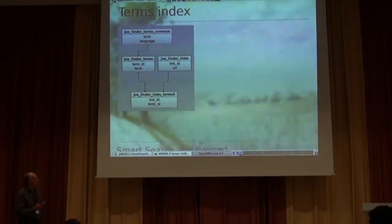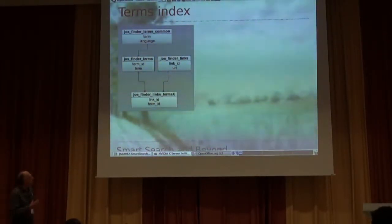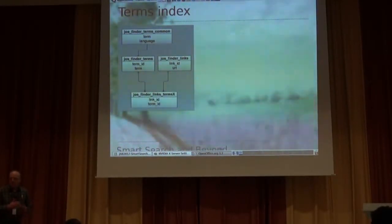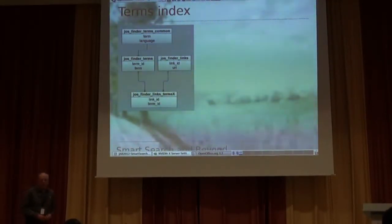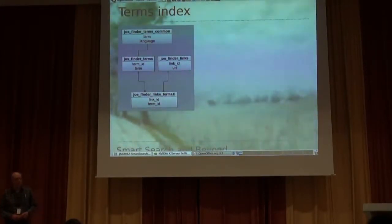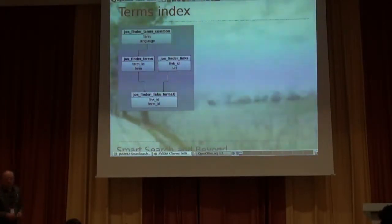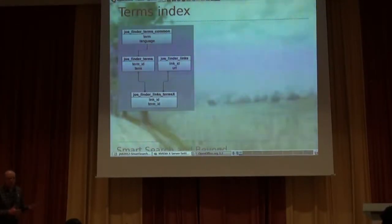So, let's have a look at the process of actually indexing. Broadly speaking, it's divided into eight parts. When I talk about an index, it's not just one table — we're actually talking about lots of different tables. If you've ever had a look at the database within 2.5, you'll see a lot of JOS underscore Finder tables — about 20 of them. The main one to look at is JOS Finder links, where there's one row pointing to each content item. The terms — the words or phrases that we're indexing — are stored in the JOS Finder terms table.